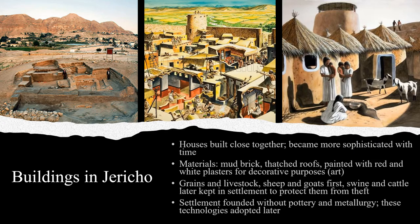Now we can talk a little bit more about the buildings of Jericho and how they were used by its residents. The houses of Jericho were built closely together but became more sophisticated with time. The materials the people of Jericho used included mud brick, roofs made of palm fronds and thatch, as well as paints and pigments like whitewash to make their houses colorful. The people of Jericho also would have kept food in their homes, including grains they had harvested, as well as their livestock — primarily sheep and goats. Swine and cattle would not be domesticated until later. Keeping their food and livestock in the settlement kept these valuable items safe from theft.